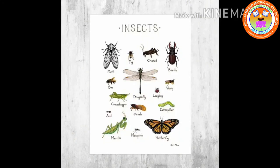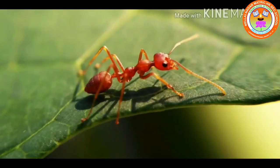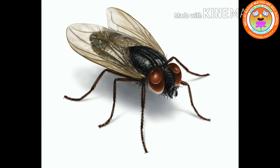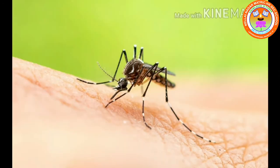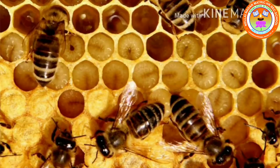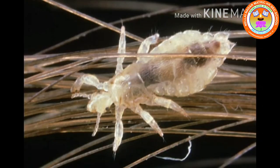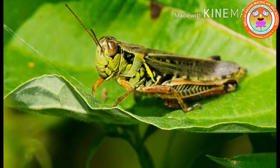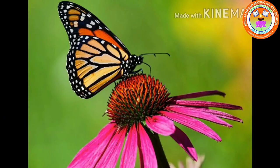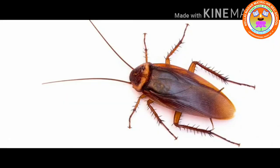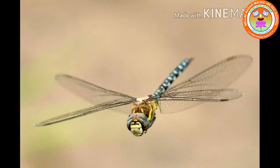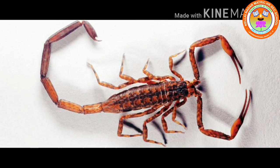Insects names: ant, house fly, mosquito, honey bee, lice, grasshopper, butterfly, cockroach, dragonfly, spider, scorpion.